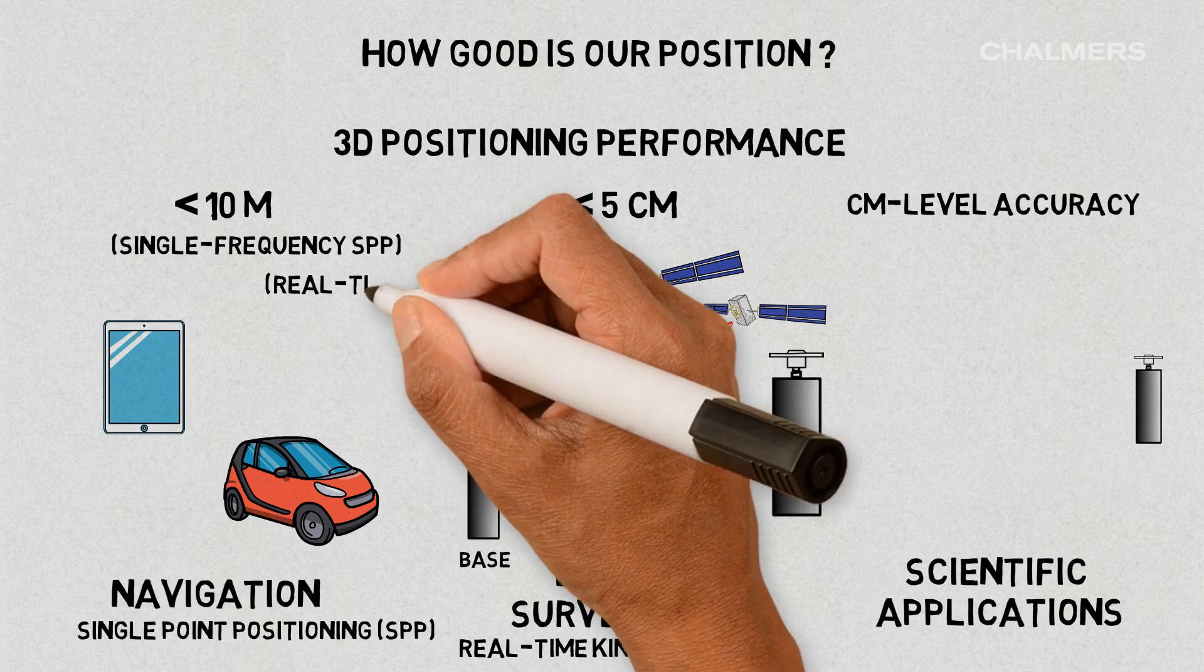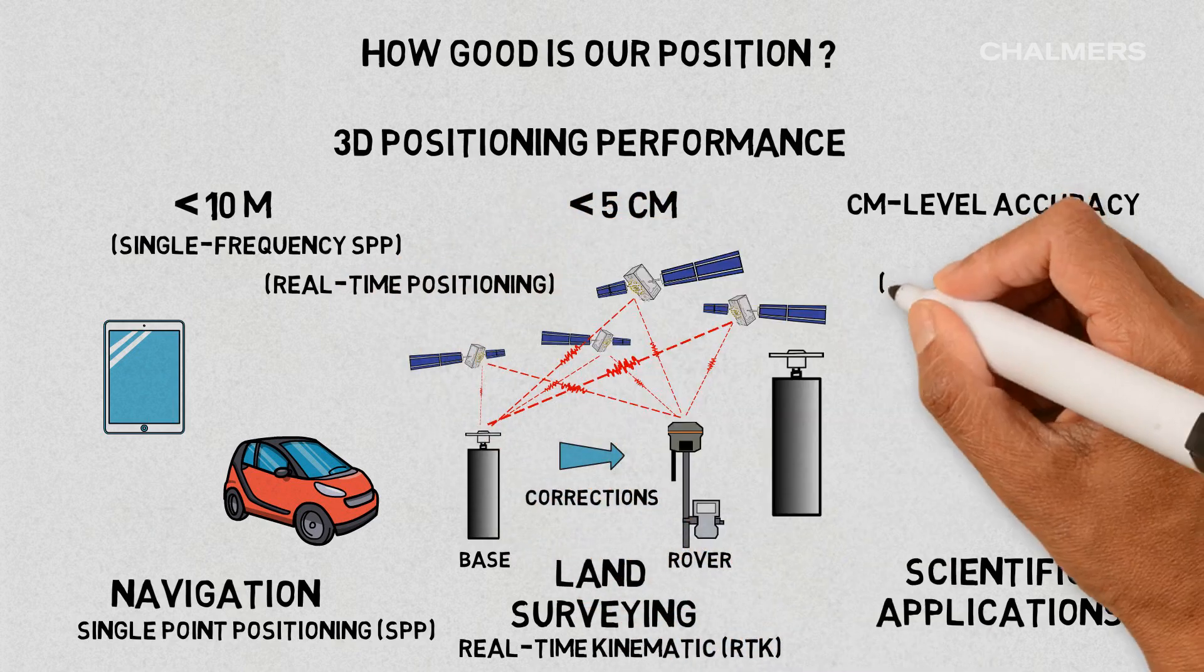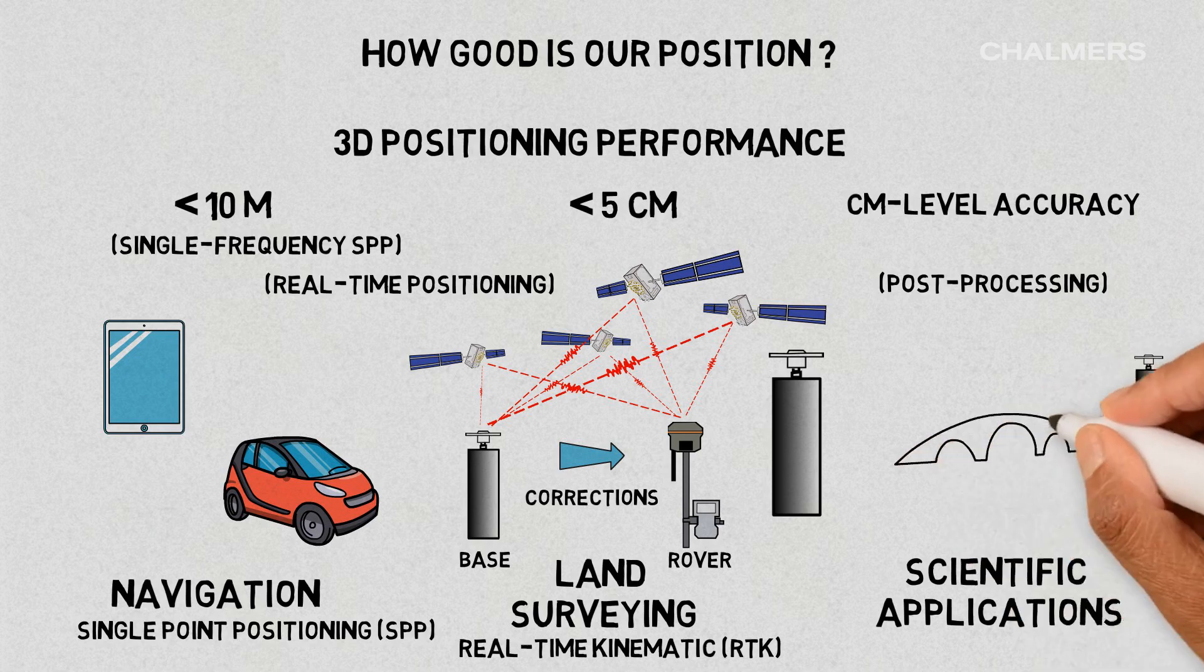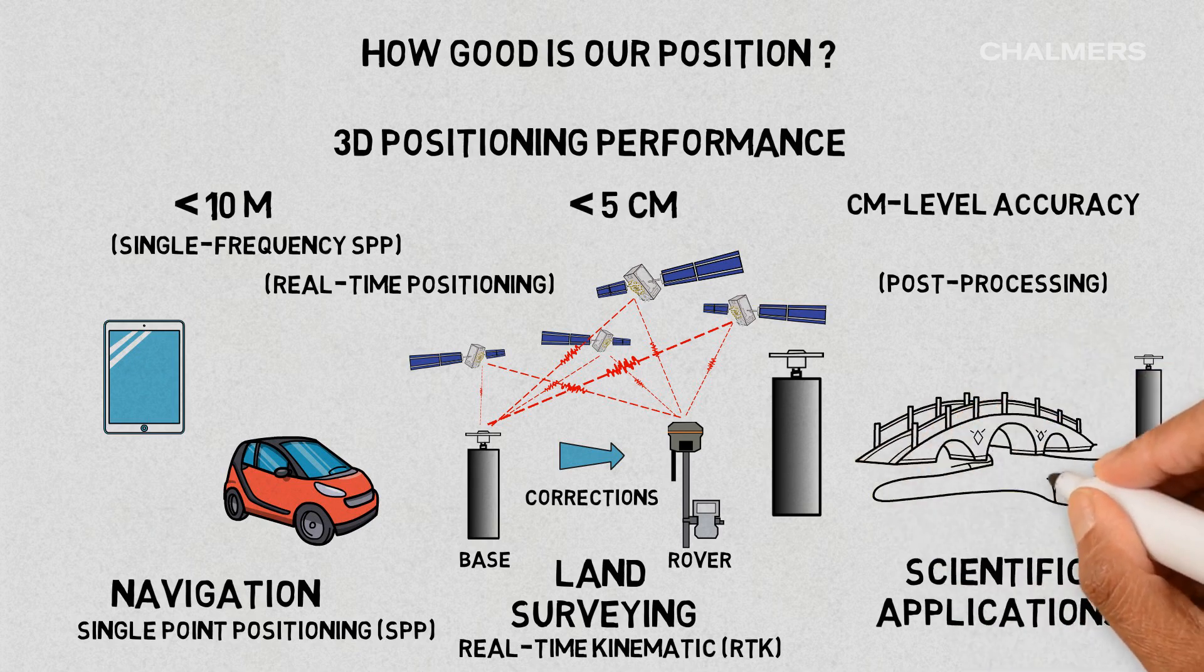In the case of navigation or RTK, the position is obtained almost instantly, whereas GNSS for scientific applications requires long observation periods, sometimes reaching months and years to investigate topics that are of high importance for society and crucial for revealing the signals of a changing climate.